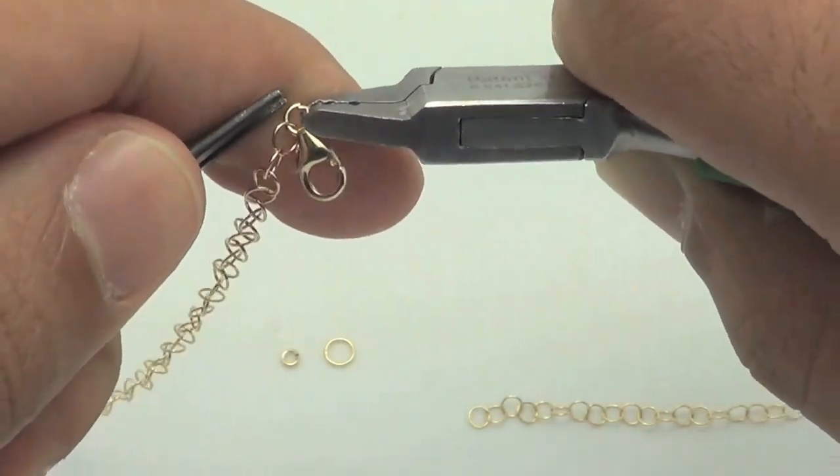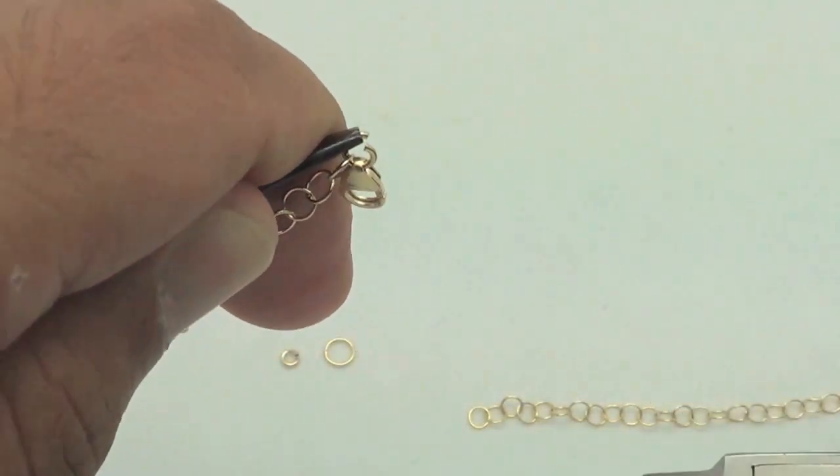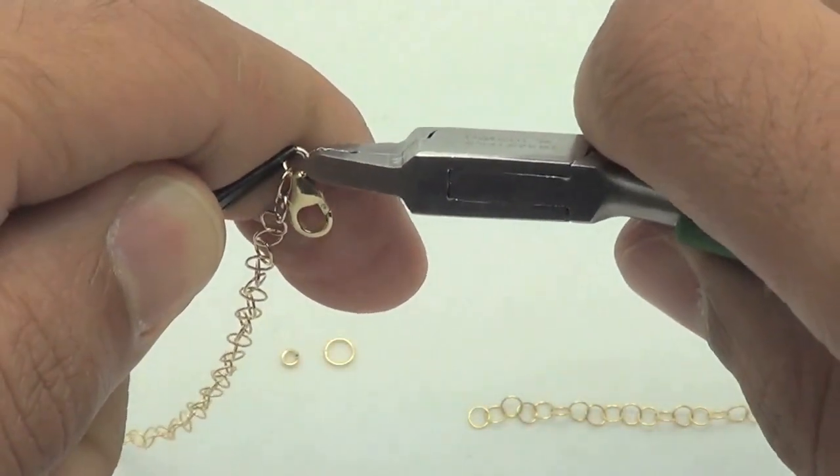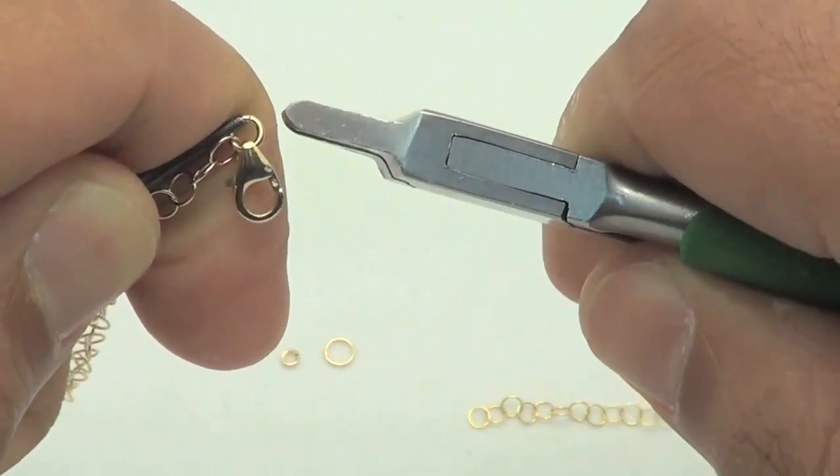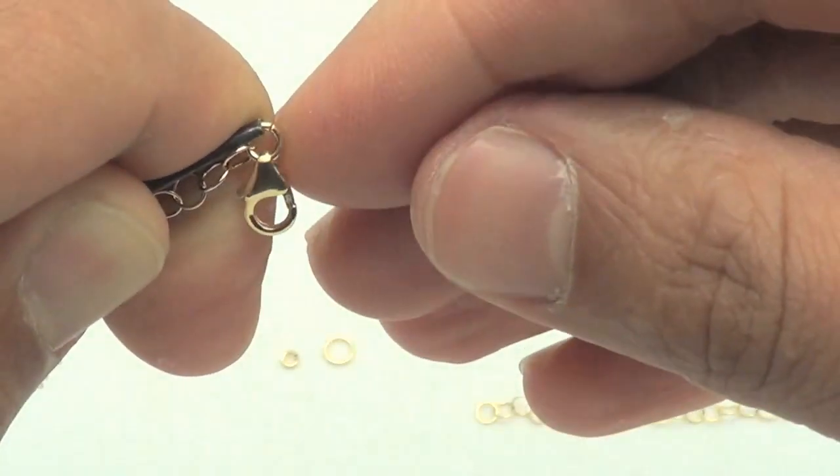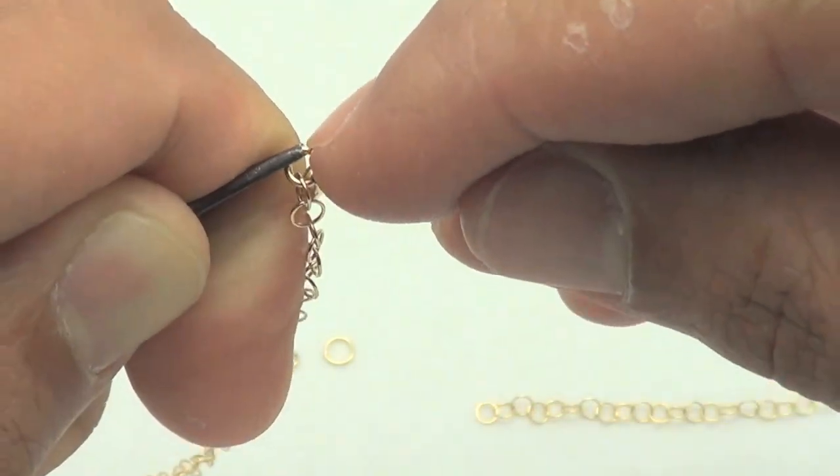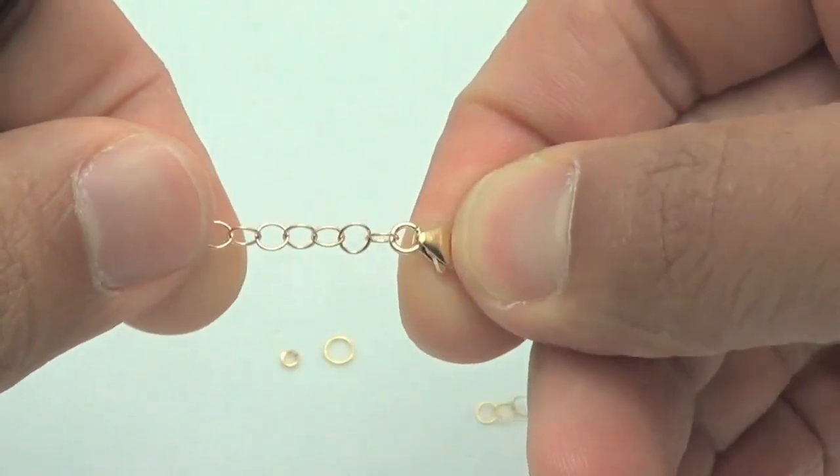Now we just put the chain on. And to close it, we bend the jump ring the opposite way that we opened it. We're going to close it and just make sure that there's no space or opening for the chain to slip out. Okay, so there's no gap and it looks good. That's it.